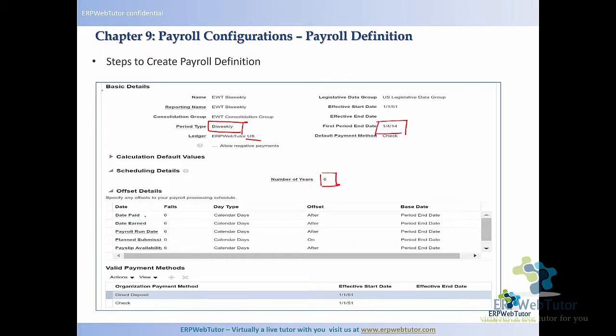These are the offset dates — date pay, date earn, and all of these — which we are going to see in the application. You also specify the different payment methods, the valid payment methods for this particular payroll. With that, let's go to the application and create a payroll.